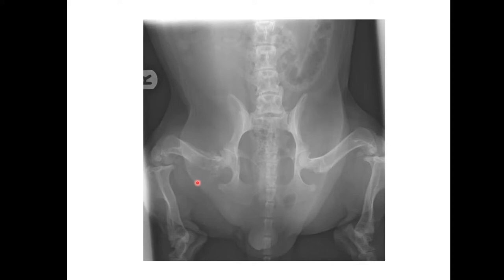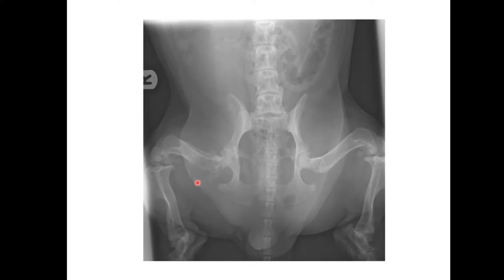Cortical destruction is absolutely something we'd expect to see with an aggressive bone lesion. Other things we'd expect to see include lysis, of which there are a couple of different sorts: geographic lysis, moth-eaten lysis, and permeative lysis. In terms of grading severity, it goes from geographic through moth-eaten to permeative — so the most lytic you'd describe as permeative. Geographic lysis tends to have more clearly defined margins, whereas moth-eaten or permeative lysis would have very ill-defined margins. That brings us on to another feature of aggressive bone disease: the zone of transition. An aggressive bone lesion is going to have a very long, indistinct zone of transition. It's difficult to know where this lesion starts and where it ends, so it has a long indistinct zone of transition.